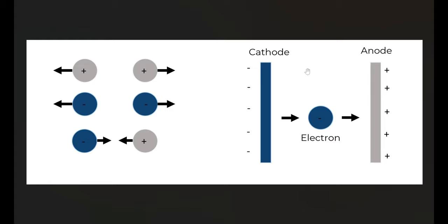If we apply that to the anode and cathode in an x-ray tube — if we have a cathode held at a negative charge and an anode held at a positive charge, and we put an electron in between the two — that electron is going to be attracted to or pulled towards the anode because an electron carries a negative charge. At the same time, it's being pushed by the cathode because the negative charges on the cathode repel the electron towards the anode.